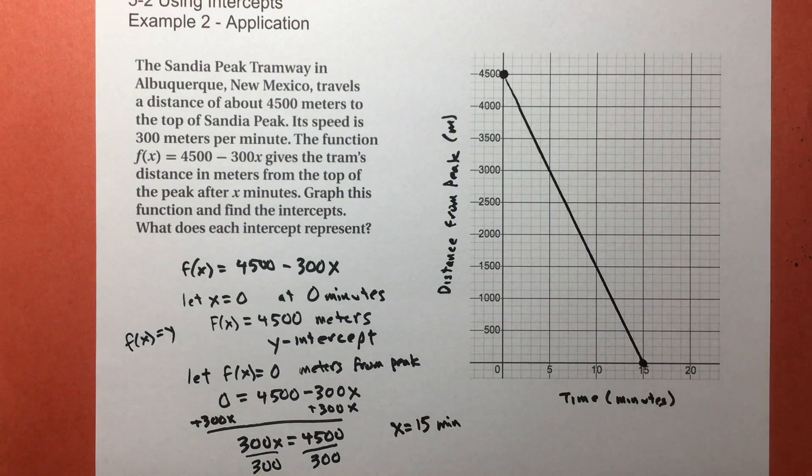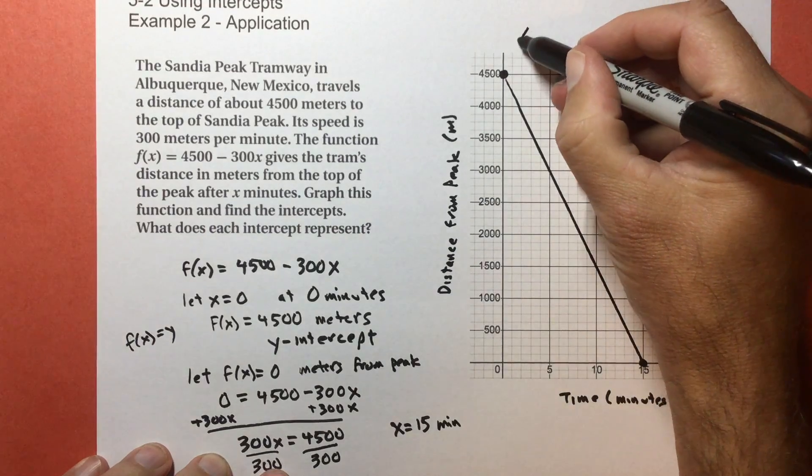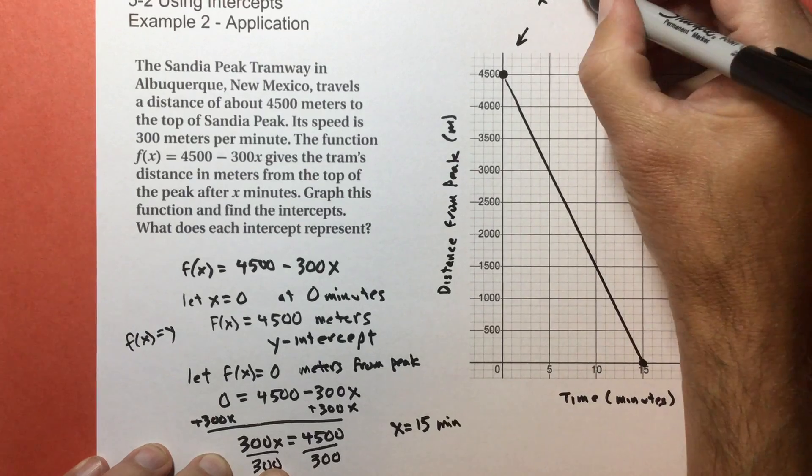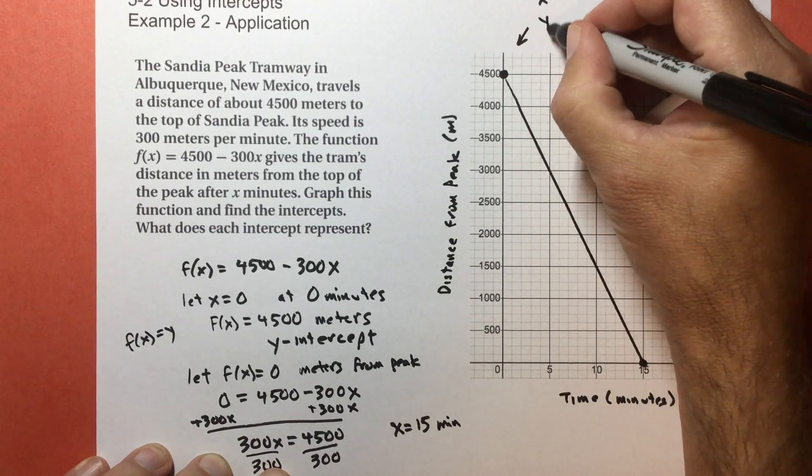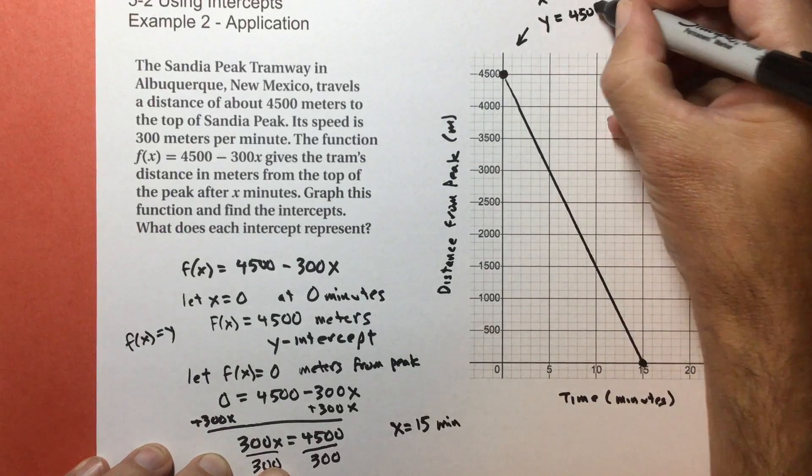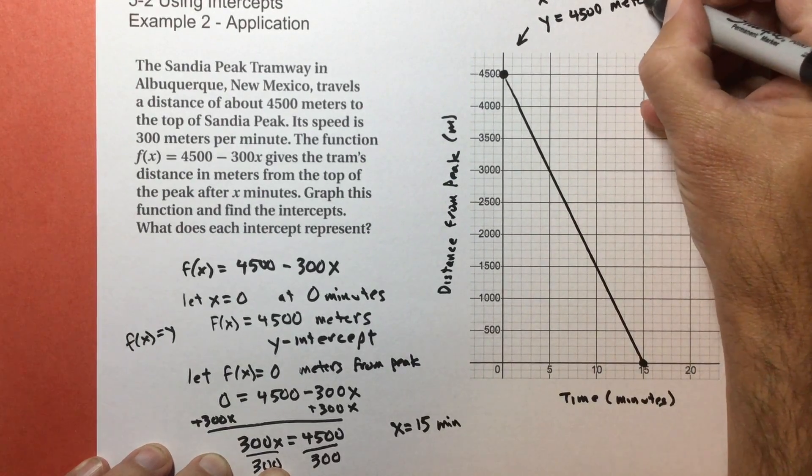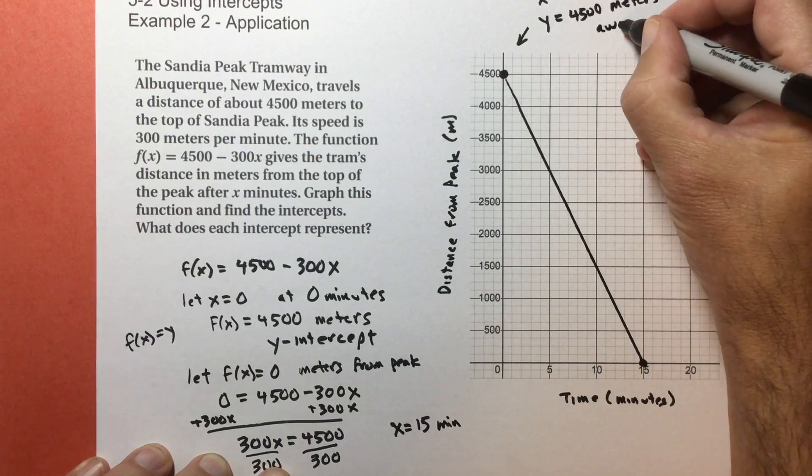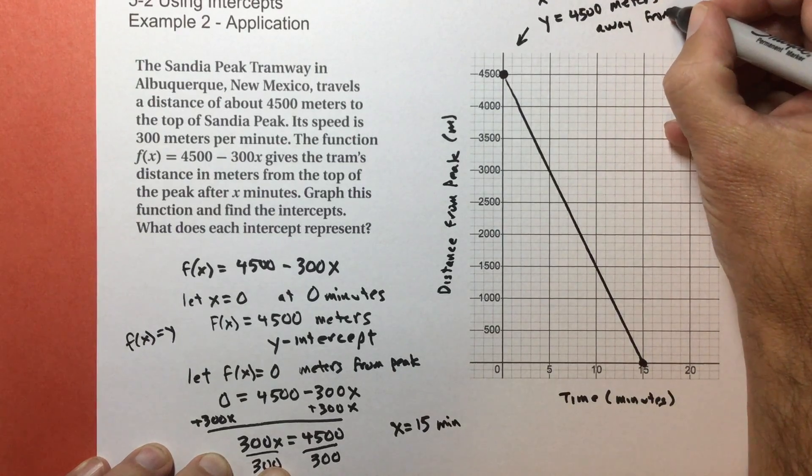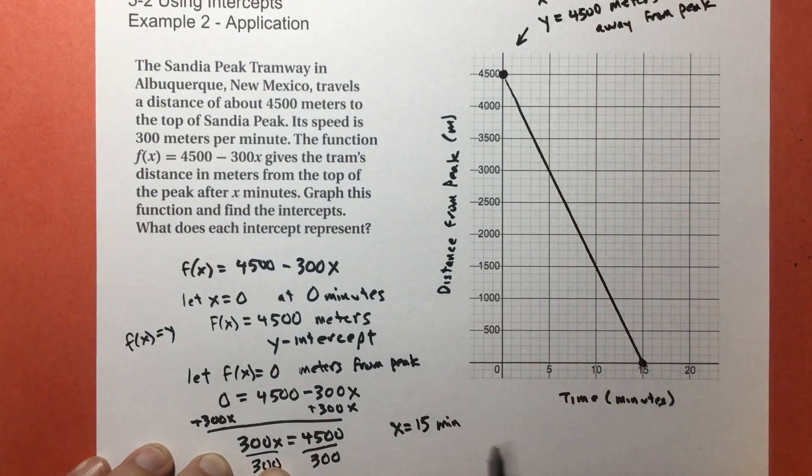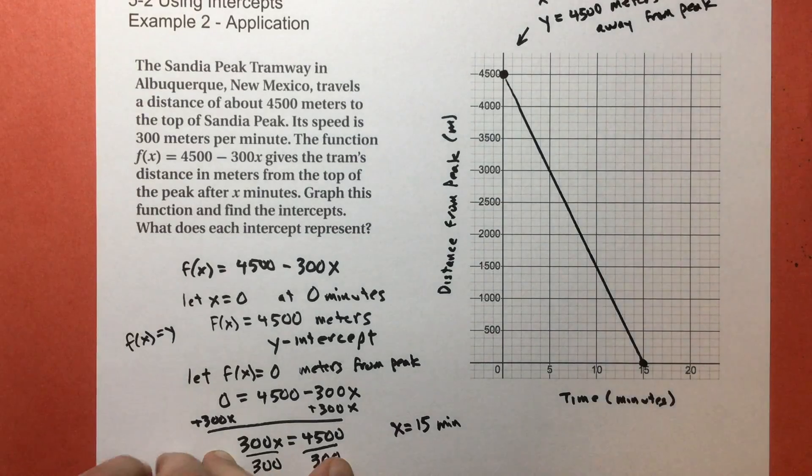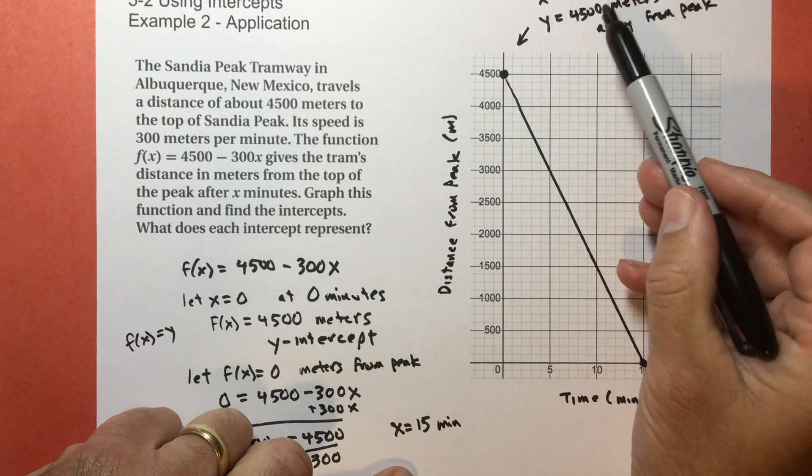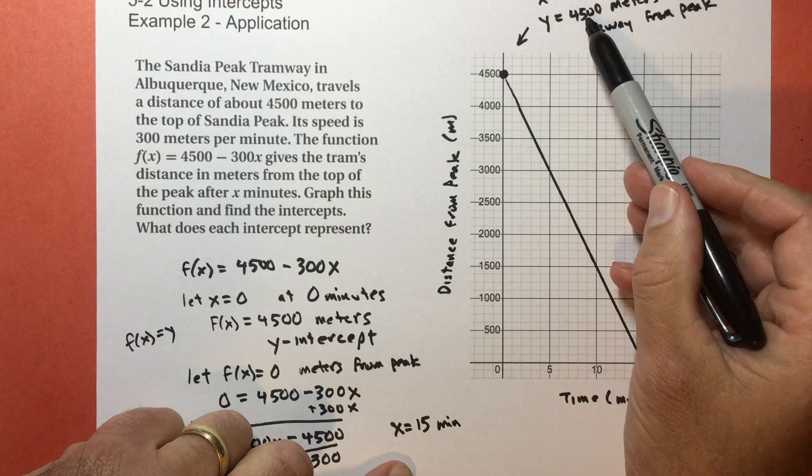And I already talked about it, but I'm going to say it again. This point right here, x equals zero minutes. The y, or the f of x, equals 4500 meters away from the peak, or the top of the Sandia Peak. So that means you haven't started moving yet, and you have 4500 meters to go.